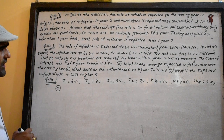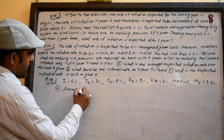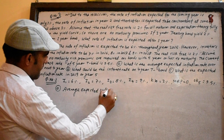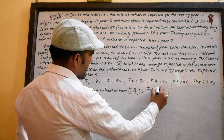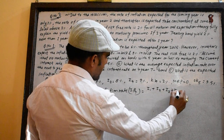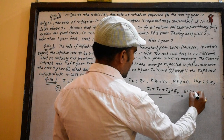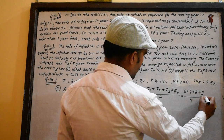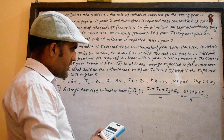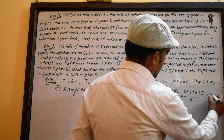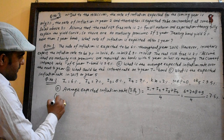What is the average expected inflation rate over the next 4 years? Average expected inflation rate over 4 years: I1 plus I2 plus I3 plus I4 plus I5. That is 6 plus 7 plus 8 plus 9, divided by 4. This gives 7.5% average.